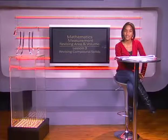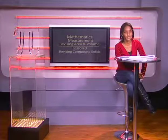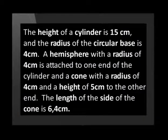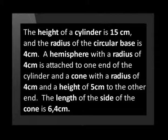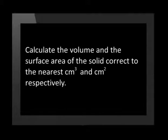You could calculate your answer using a different method, but just make sure you follow the proper steps and you will get the answer right. Let's look at an example of calculating the volume and surface area of a solid that is not a right prism. The height of a cylinder is 15 centimeters and the radius of the circular base is 4 centimeters. A hemisphere with the radius of 4 centimeters is attached to one end of the cylinder and a cone with the radius of 4 centimeters and a height of 5 centimeters to the other end. The length of the side of the cone is 6.4 centimeters. Calculate the volume and surface area of the solid correct to the nearest centimeter cubed and the nearest centimeter squared respectively. Why don't you try this on your own before moving on with the lesson?